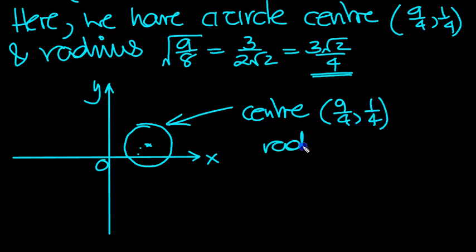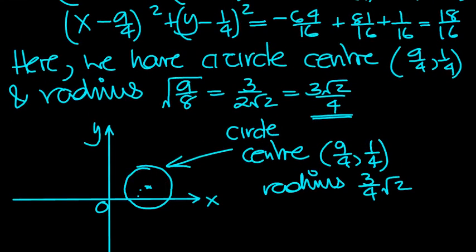And the radius is 3 quarters root 2. And it was a circle. And we had the equation just above. We derived in Cartesian form here.